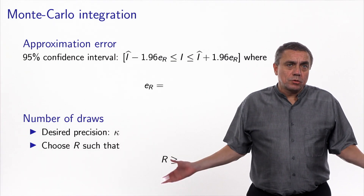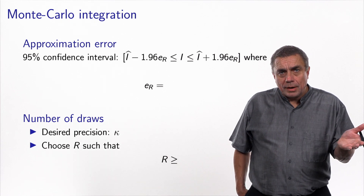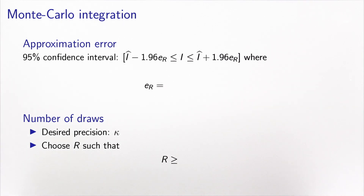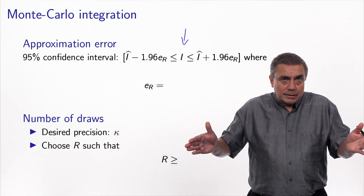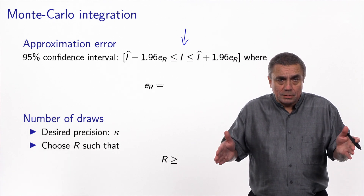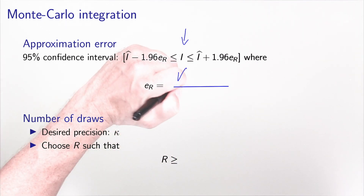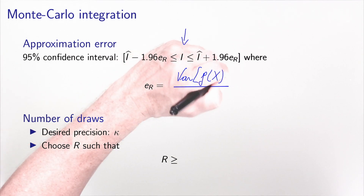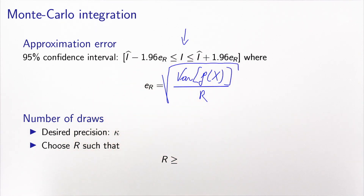This is very useful because I can derive two important pieces of information from this variance analysis. First, I can have a confidence interval. The true value of the integral, capital I, is unbiased and so centered at I hat. For the 95% interval, I take the quantile of the normal distribution, and the standard error is the square root of the variance of G(X) divided by R.